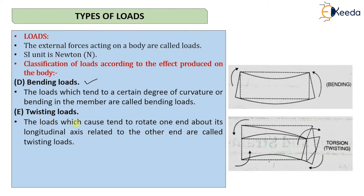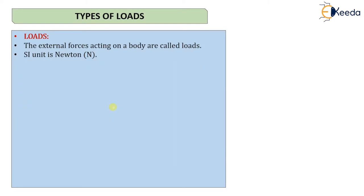Then we have twisting loads. As the name suggests, these loads cause or tend to rotate one end of a member about its longitudinal axis — that is, along the length of the member. This is also known as torsion. The load causing this twisting or torsion is called a twisting load.